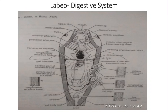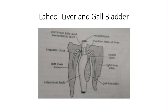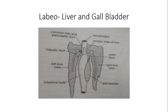The rectal gland is absent in Labio, which is present in Scoliodon. Regarding the digestive glands, the liver and gallbladder are present, and three hepatic ducts form a bile duct. This bile duct opens dorsally into the roof of the cardiac part of the intestinal bulb along with the pancreatic duct. This is all about the digestive system — the alimentary canal and digestive glands.